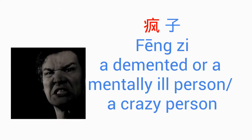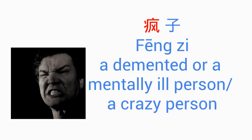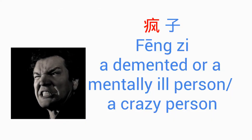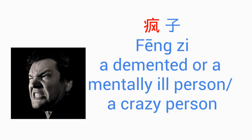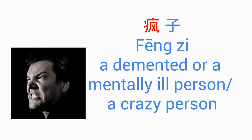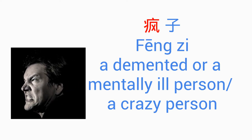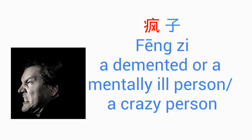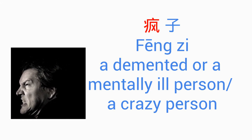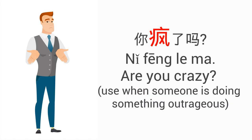Another word with 病字頭 is 瘋子. 瘋子 means demented or mentally ill person, commonly referred to as a crazy person. In a question, you can ask 你瘋了嗎? — Are you crazy? For example, if someone donated all their money, you might say 你瘋了嗎?